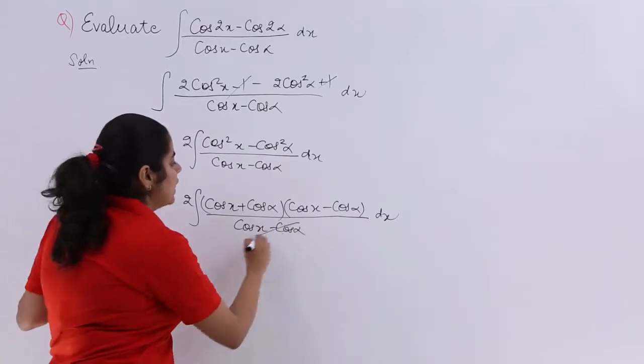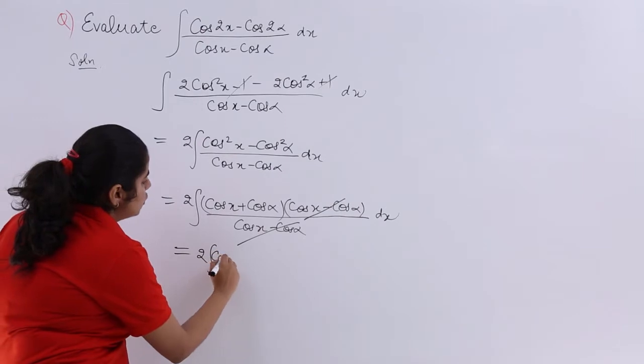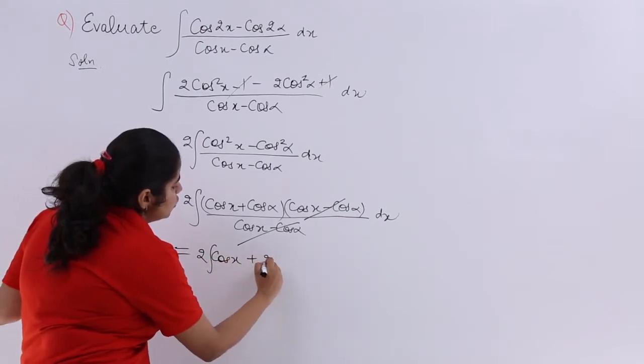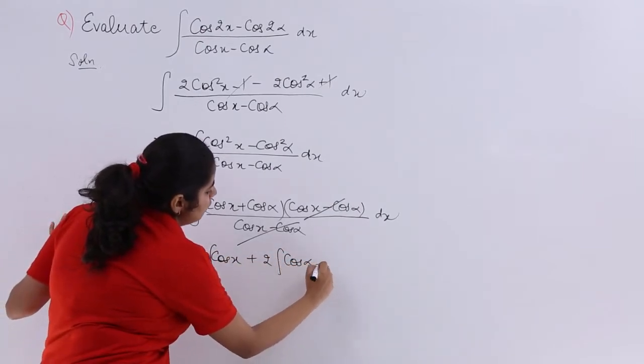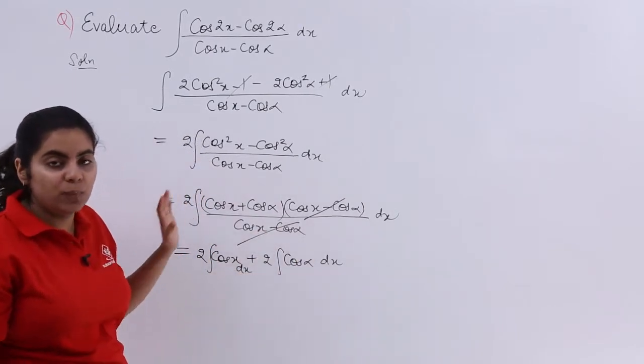Now cancel whatever cancels. These two terms cancel, so I am left with 2 times the integral of (cosx plus cosalpha) dx. I hope this is clear.